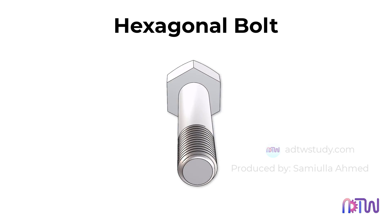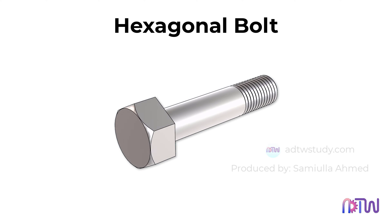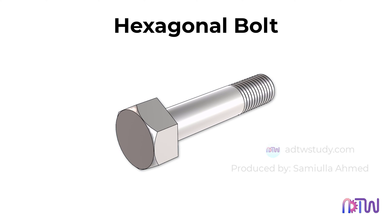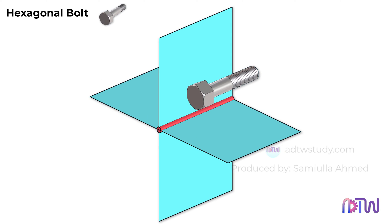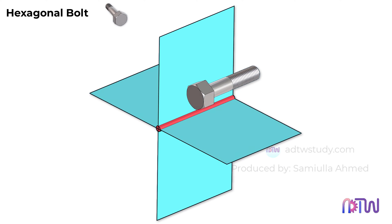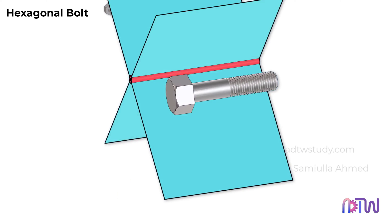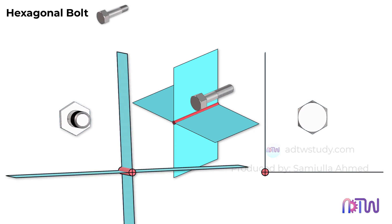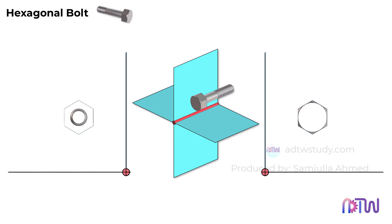The widely adopted method for such drawings is the first angle method. Here, we imagine a hexagonal bolt positioned in the first quadrant. Our reference point for viewing the bolt is from this angle, making this side our front view. When observed from this perspective, the bolt presents itself in this manner. A top view reveals this configuration, while the left and right side views showcase these orientations. This elucidates the differing aspects of a hexagonal bolt from various angles.